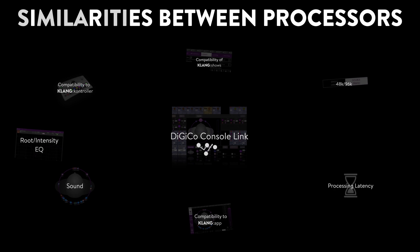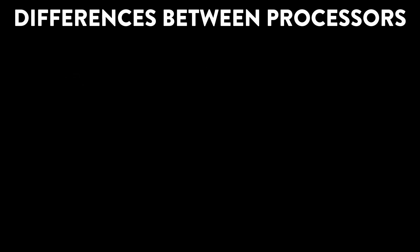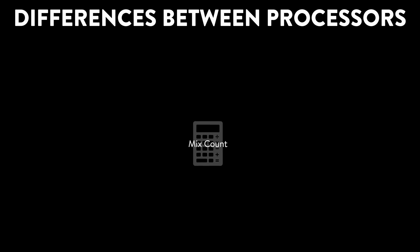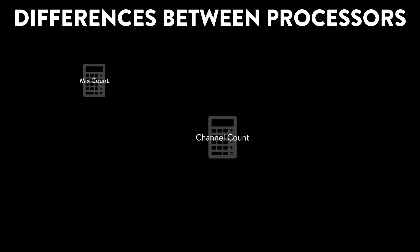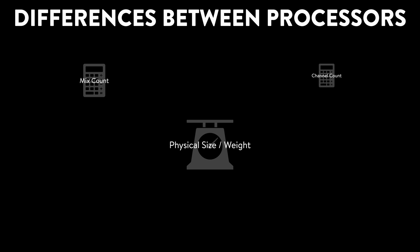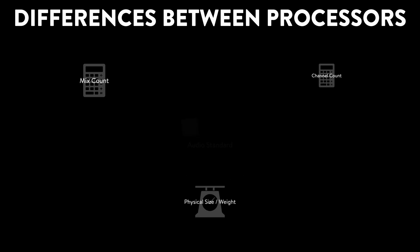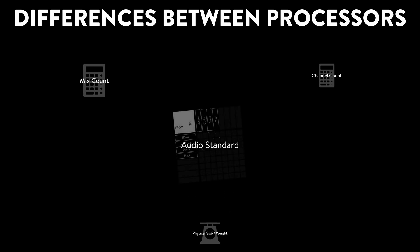What about the differences? Clang Conductor, DMI Clang and Clang Vocal have different capabilities in terms of mix count, input channel count, and of course the physical size and weight. Different audio standards like Dante, MADI and OptoCore can be used for the connection with your ecosystem.